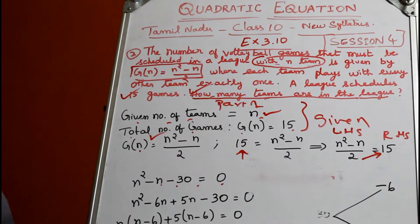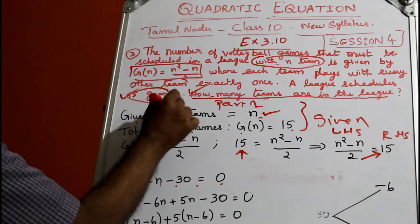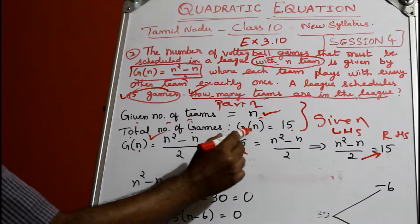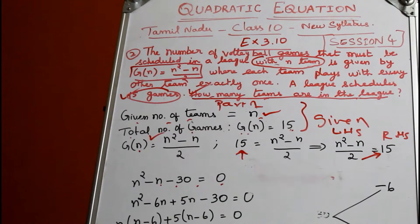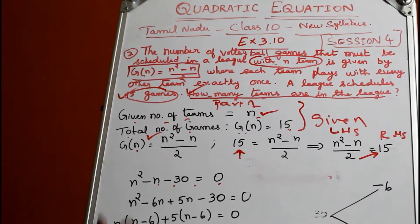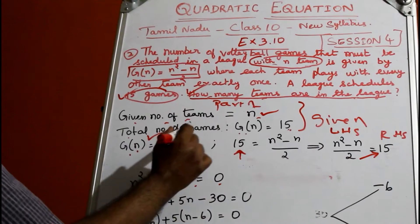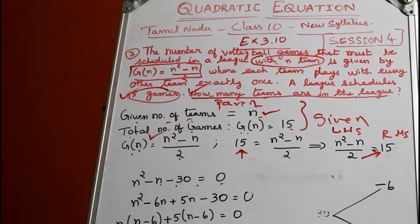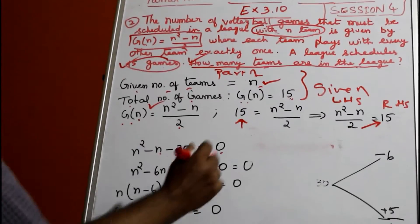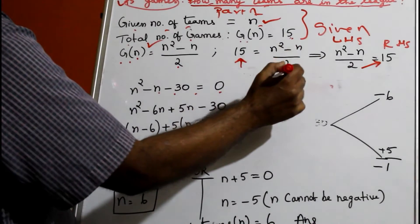Totally there are 15 games played by the league, so total number of games G(n) = 15. They gave the equation G(n) = (n² - n)/2. In place of G(n), you must put 15 = (n² - n)/2.